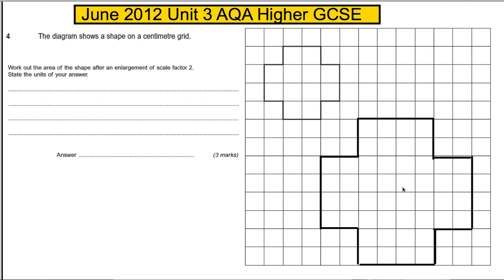You could count the squares there, and counting the squares would give you the area of the enlarged shape. Actually, they were really kind to you in this question giving you the grid to draw it, because weaker students could just draw this. However, you didn't need to draw it at all.